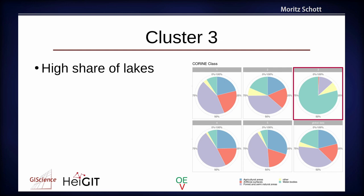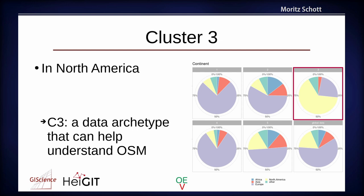Looking at what these objects actually are — there's a high share of lakes in cluster 3. And this was not part of the cluster input, since we removed all geographical information. Yet the cluster algorithm still agglomerated all cluster 3 objects together, and they turn out to be from North America. This cluster obviously represents some North American lakes that are very detailed but in areas with less OpenStreetMap information. This can be an archetype of OpenStreetMap data worth looking into further.